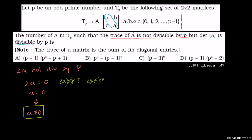Now let's look at the second constraint: the determinant of A is divisible by P. The determinant of A is equal to A times A, which is A squared minus B times C, so minus BC. This is going to be divisible by P, equal to some integer times P. Looking at this, there's no obvious simplification.